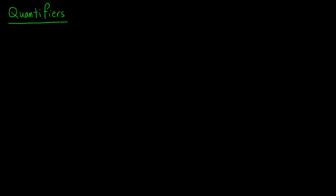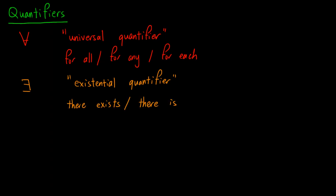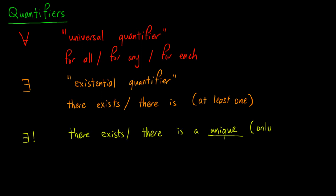After introducing predicates, it is important to talk about quantifiers, which appear very often in predicates. First, we have an upside-down A, which is the universal quantifier. It means 'for all,' 'for any,' 'for each,' or basically any phrase which includes all possibilities. Secondly, we have a backwards E, which is the existential quantifier. It means 'there exists' or 'there is.' Note that there can be more than one possibility when this symbol is used — it asserts that there is at least one. If we want to emphasize that there is only one possibility, we add an exclamation mark after the backwards E, to mean 'there exists a unique.'